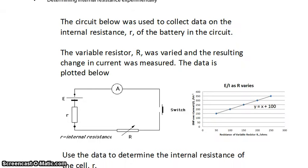We have a circuit below. It was used to collect data on the internal resistance, little r, of the battery in the circuit shown here. So we have an EMF source and an internal resistance, and all of this would be part of the battery.